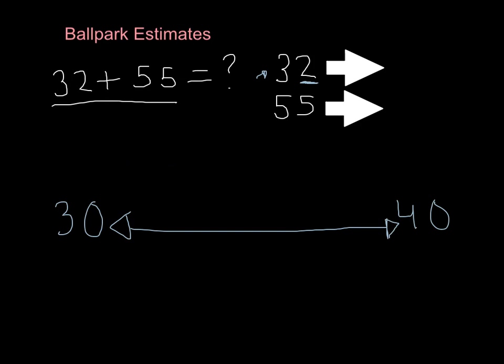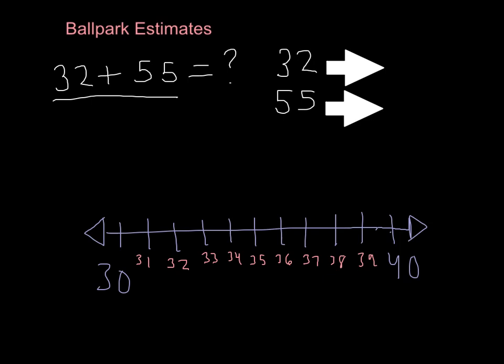So let's see. 32 is right here. And it is 1, 2 spaces away from 30. From 40, it is 1, 2, 3, 4, 5, 6, 7, 8 spaces away.